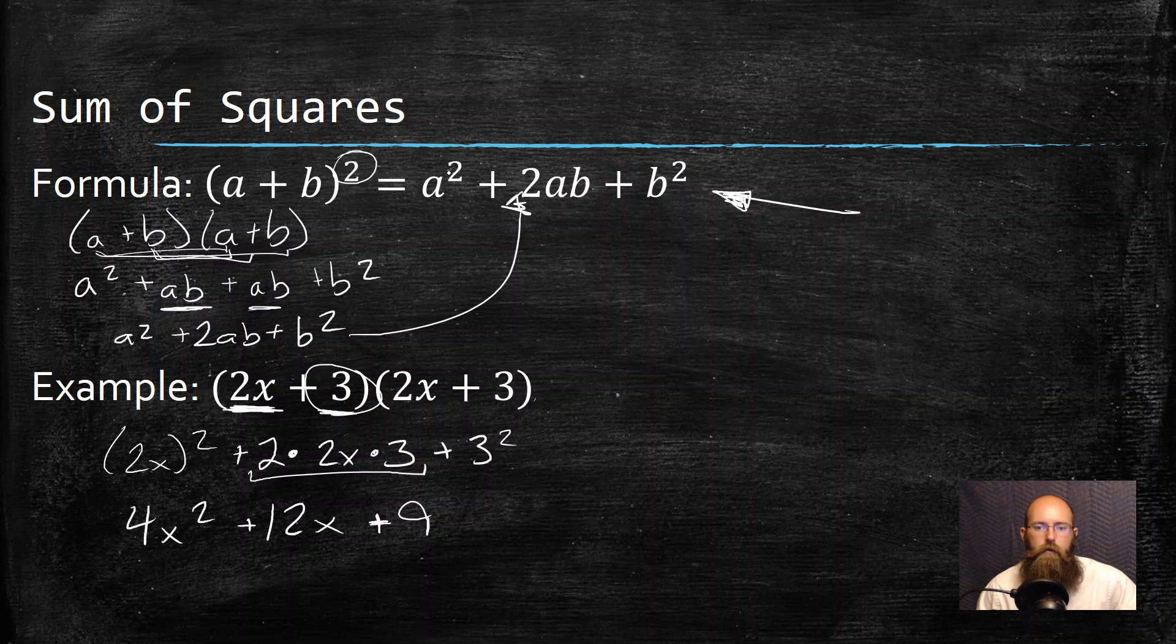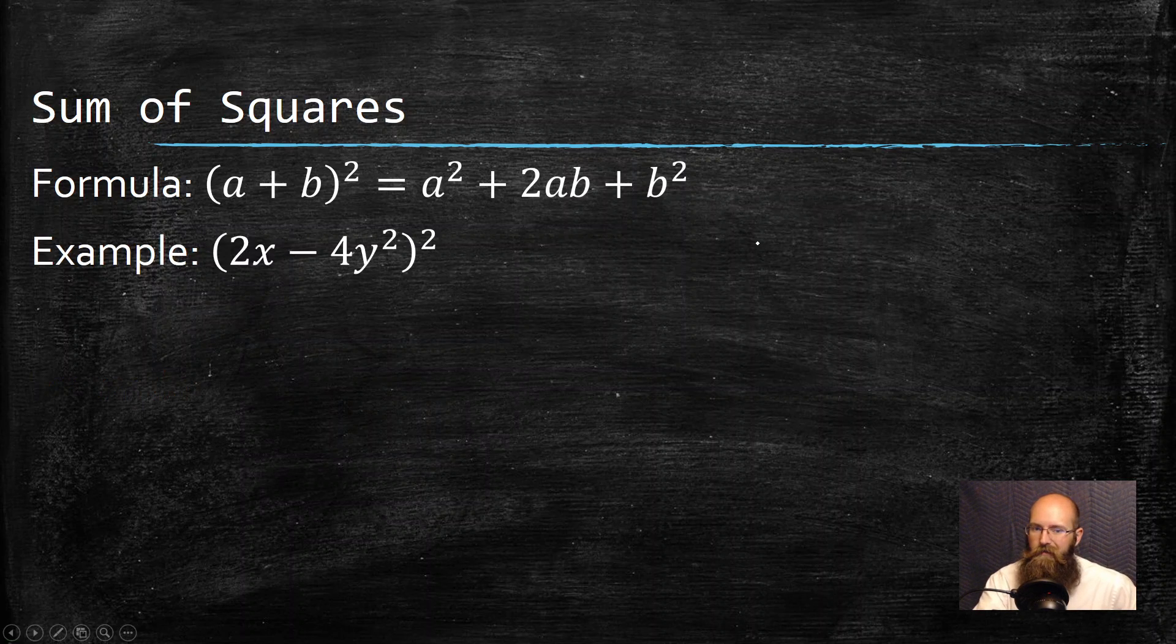And then you square your second thing. So you square it, double it, square it again. So square it, double it, and the doubling it is the two things multiply together. And then you square the last term. Let's do another one that's a little bit more challenging.